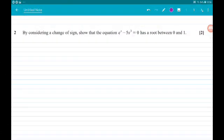Question 2 for 2 marks. By considering a change of sign, show that the equation e^x - 5x^3 = 0 has a root between 0 and 1.